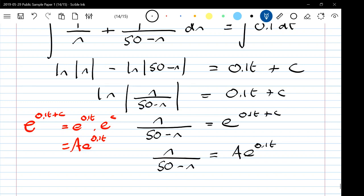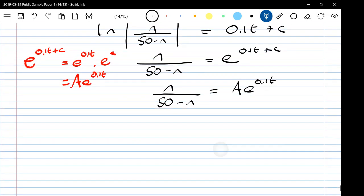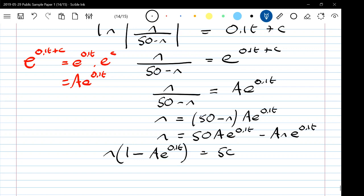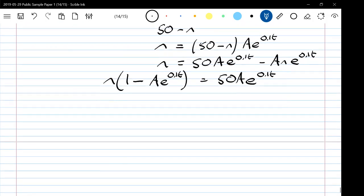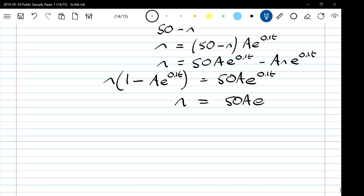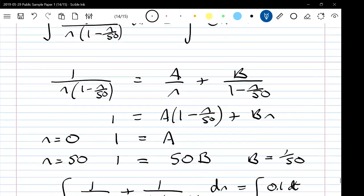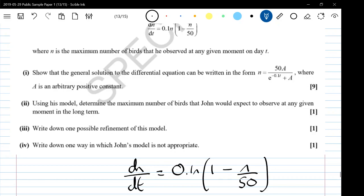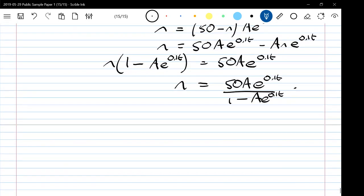So n over 50 minus n equals A e to the 0.1t, which gives n equals 50A e to the 0.1t minus An e to the 0.1t. Collecting together like terms, we've got n times 1 minus A e to the 0.1t equals 50A e to the 0.1t, so n is 50A e to the 0.1t over 1 minus A e to the 0.1t. We're still not quite there but notice that where we're aiming for has e to the minus 0.1t in it.